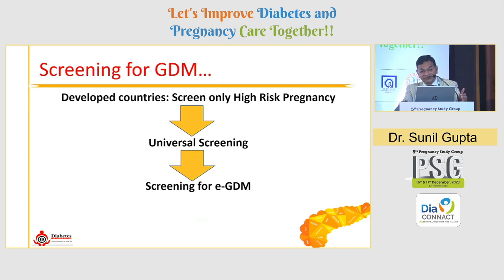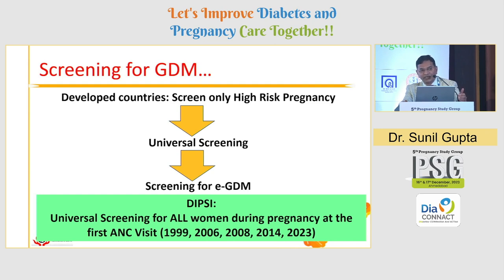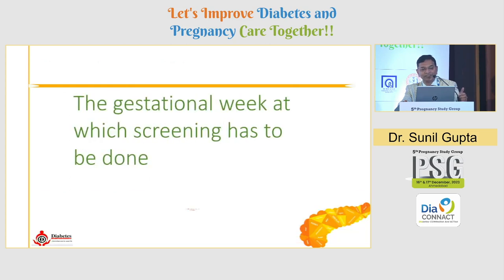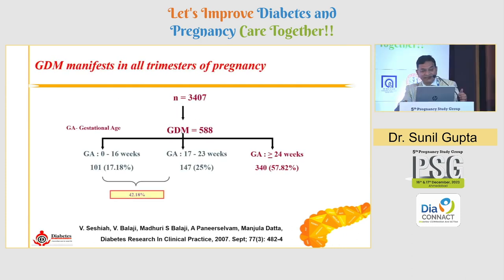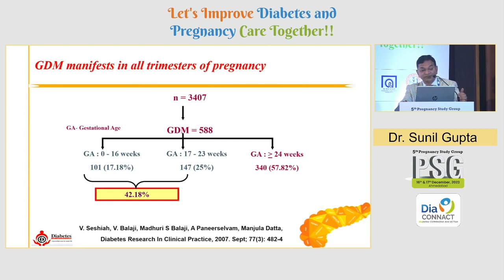In developed countries, screening was initially only for high-risk patients, then universal screening came, and now screening for EGDM. DIPSI has been advocating universal screening in India for around 20 years, with the first paper in 2006 and subsequent recommendations in 2008, 2014, 2018, and 2023. Universal screening for every woman at her first clinic visit is recommended. Data from Dr. Seshiah in 2007 shows almost 42% of women were diagnosed before 24 weeks of pregnancy, and 17% were diagnosed before 16 weeks — in the first trimester.